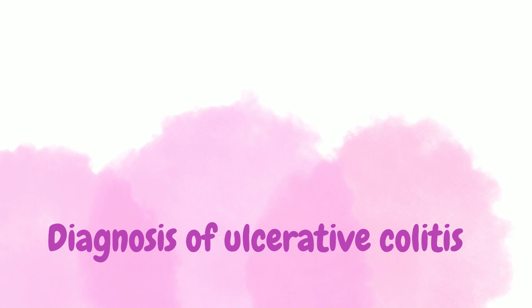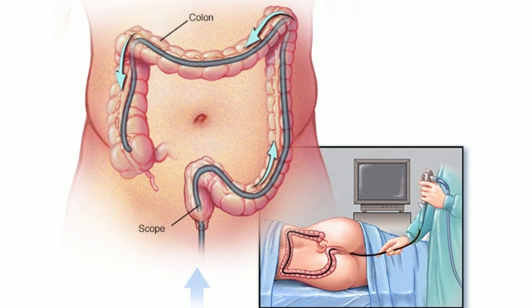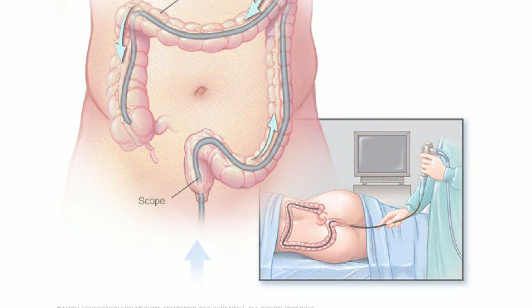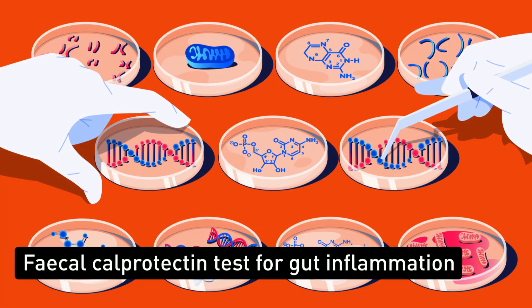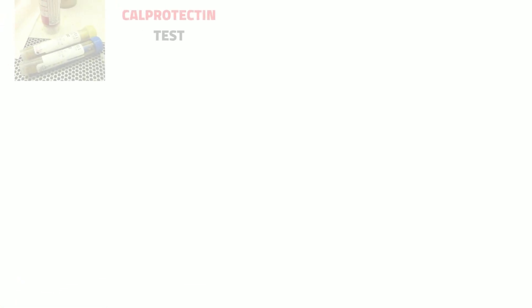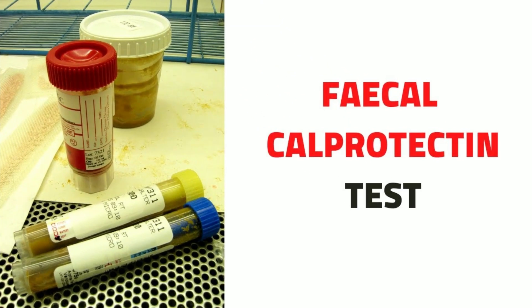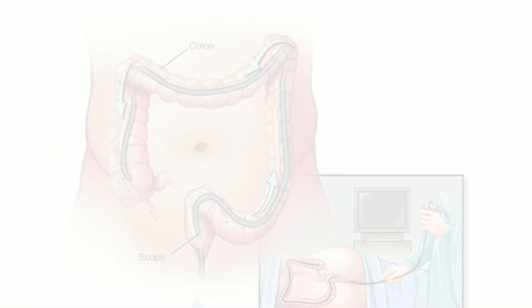The two primary methods used to diagnose ulcerative colitis are calprotectin testing of the stool and colonoscopy. Calprotectin is a protein released by neutrophils, a type of white blood cell. Neutrophils travel to the inflamed part of the gastrointestinal tract and release calprotectin, causing its level in the stool to rise. The calprotectin test examines the amount of calprotectin in stool to find intestinal inflammation.